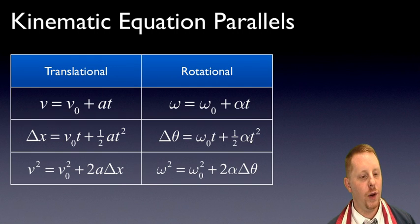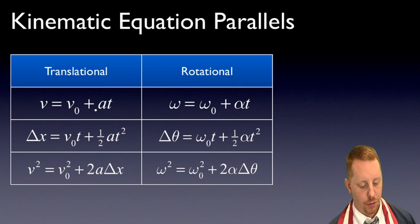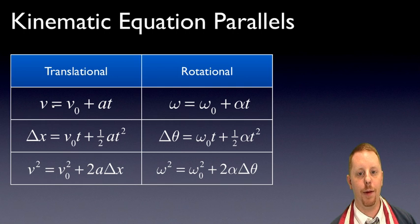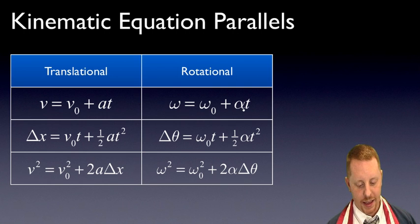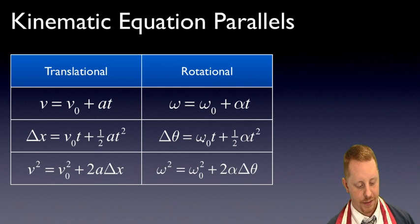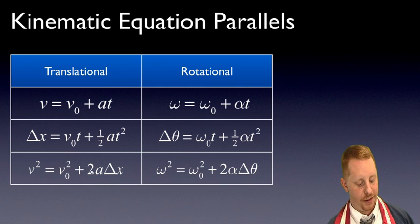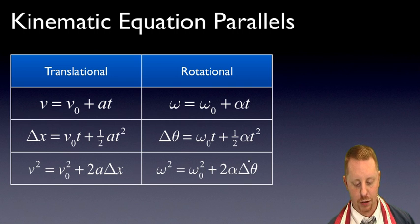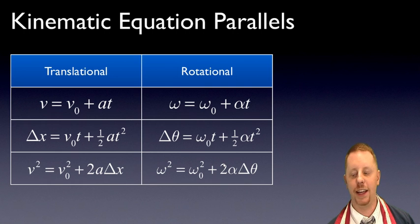Let's look at the kinematic equations. For translational motion we have three: V = V₀ + AT; ΔX = V₀T + ½AT²; and V² = V₀² + 2A·ΔX. To get the rotational kinematic equations, simply replace each translational variable with its rotational equivalent: V→ω, V₀→ω₀, A→α, and ΔX→Δθ. This gives: ω = ω₀ + αT; Δθ = ω₀T + ½αT²; and ω² = ω₀² + 2α·Δθ — the same basic formulas with rotational variables.